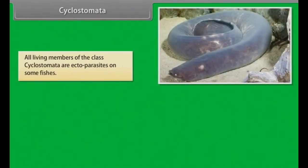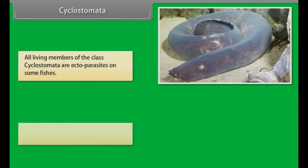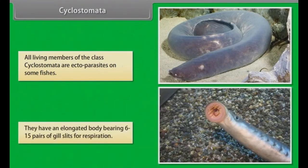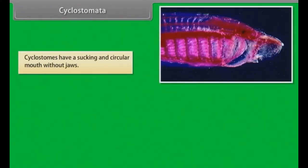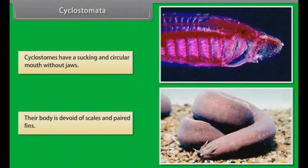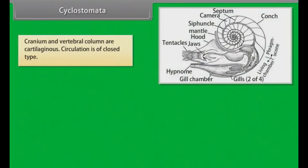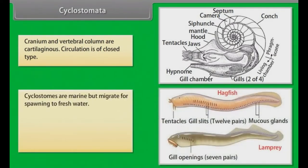All living members of the class Cyclostomata are ectoparasites on some fishes. They have an elongated body bearing six to fifteen pairs of gill slits for respiration. Cyclostomes have a sucking and circular mouth without jaws. Their body is devoid of scales and paired fins. Cranium and vertebral column are cartilaginous. Circulation is of closed type.